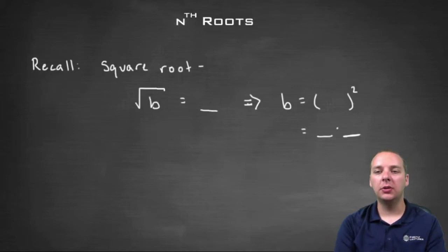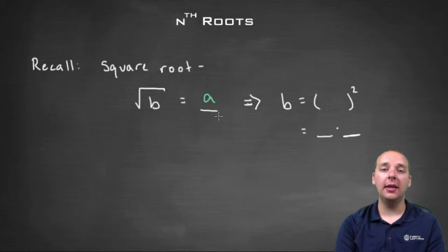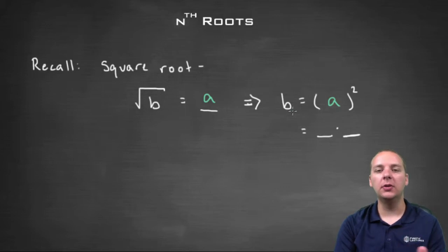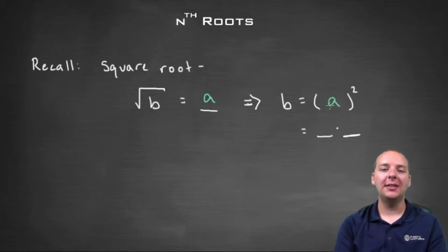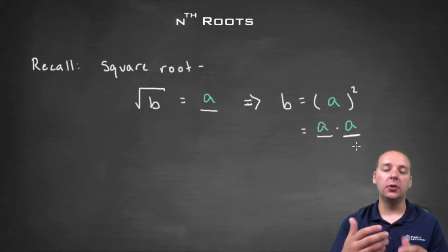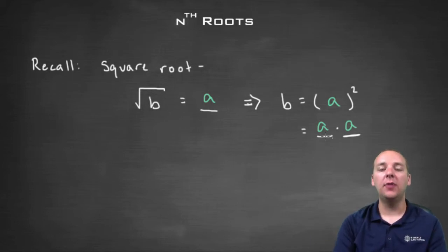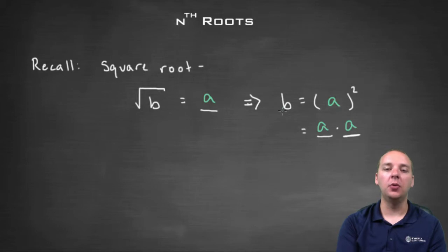Thinking back to square roots, the square root of a number b equals a if you squared a to get b. For example, the square root of nine equals three because when you square three, that's the number that gives you nine. Now, when I say a squared, I want to think of it as two factors of a multiplied together — three times three gives you nine.